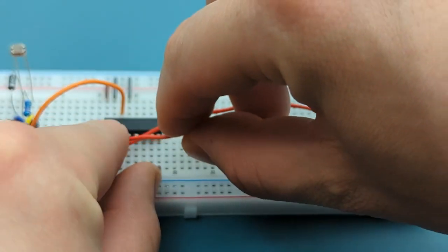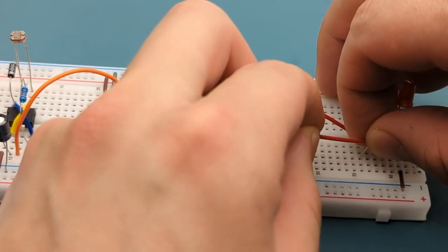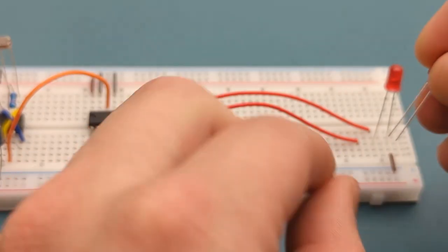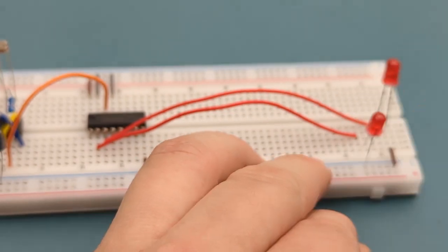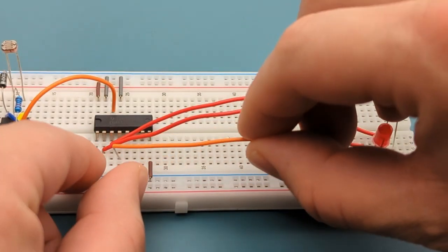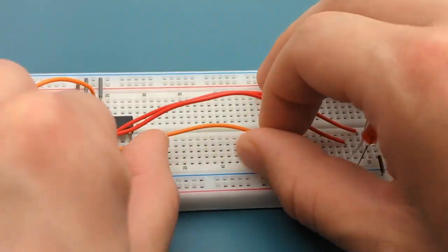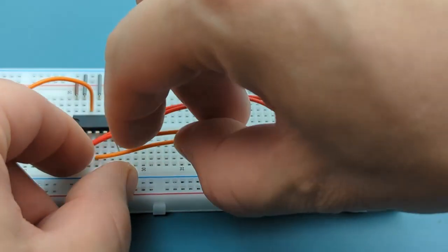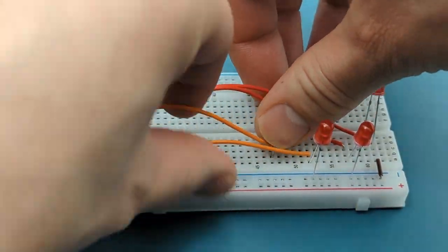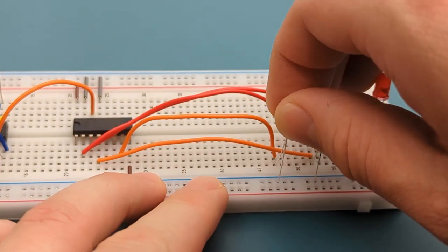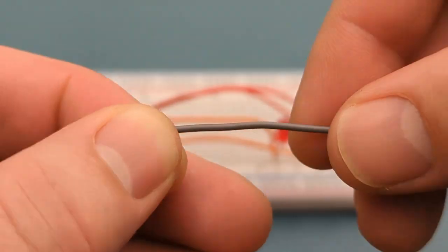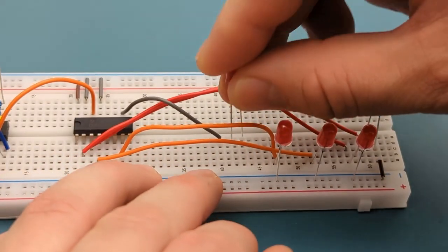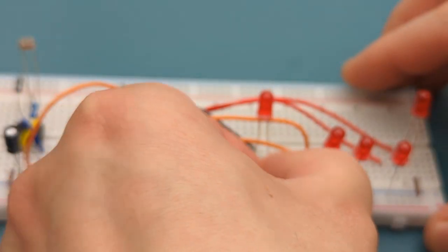Connect pin 2 to the second LED. Insert one leg of the LED in the same row as the jumper wire and the other in the negative rail. Insert the shorter leg in the negative rail. Connect pin 4 to the third LED. Connect pin 7 to the fourth LED. Connect pin 10 to the fifth LED. The fifth LED has the same setup as the first LED with both legs in the middle of the breadboard.